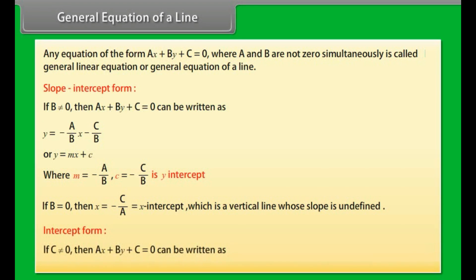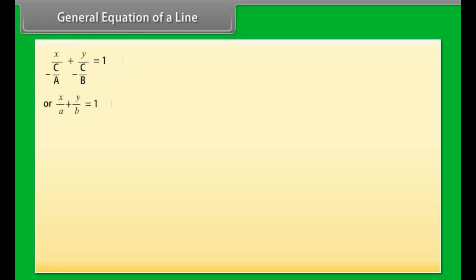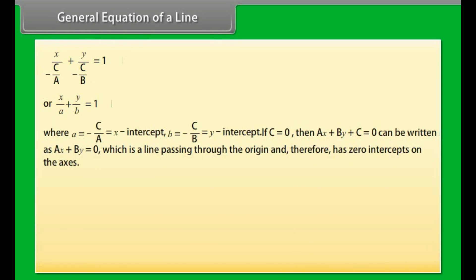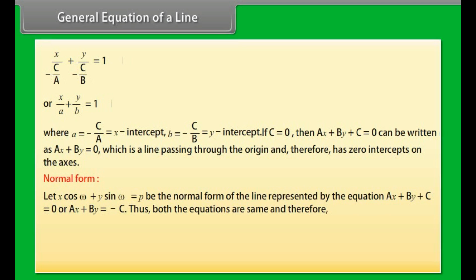Intercept form: If c ≠ 0, then ax + by + c = 0 can be written as x/a + y/b = 1, where a = −c/a is the x-intercept and b = −c/b is the y-intercept. If c = 0, then ax + by = 0, which is a line passing through the origin with zero intercepts on both axes. Normal form: Let x cos ω + y sin ω = p be the normal form of the line ax + by + c = 0.